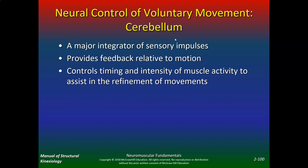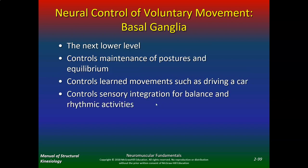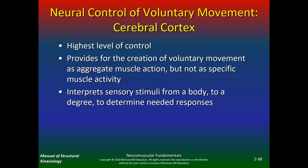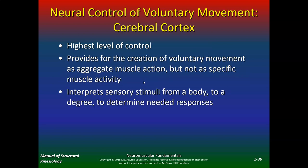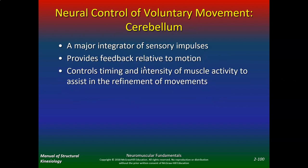The cerebellum is a major integrator of sensory impulses. It provides feedback relative to motion and controls timing and intensity of muscle activity. For example, the cerebral cortex tells me I want to run from point A to point B, but the cerebellum will say: how fast am I going to run? Am I going to run in a straight line or backwards? How's the balance? So the cerebellum fine-tunes control — from gross motor control to more specific.